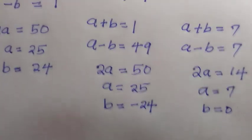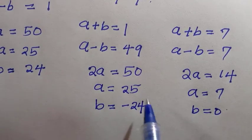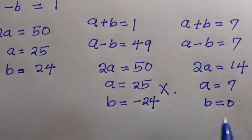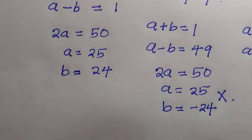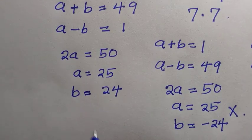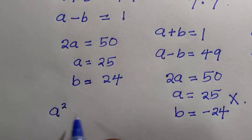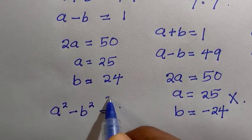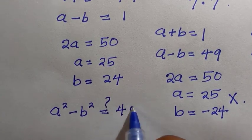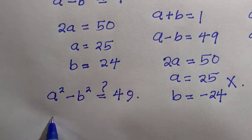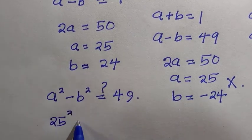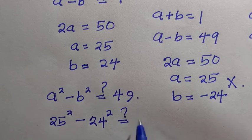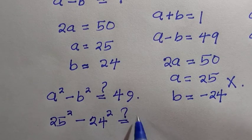The second case is invalid because a plus b must always be greater than a minus b. Therefore we go with the first and third cases. You can verify: since a is 25, we compute 25 squared minus 24 squared, which equals 49.